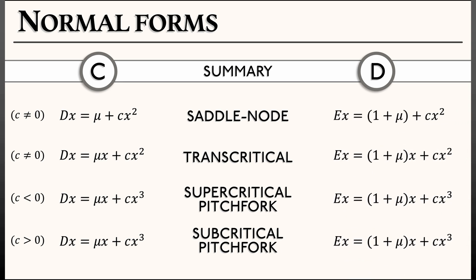So we can convert all of these into using the shift operator. For example, the saddle node bifurcation in discrete time looks like E x equals 1 plus mu plus c x squared. This, again, is going to have a bifurcation at x equals 0 and mu equals 0. And that goes down the list.